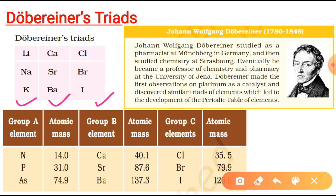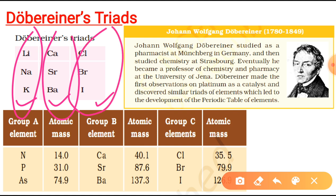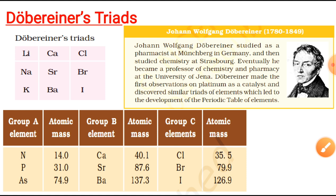Let's talk about the limitation. All the elements discovered at the time when Dobereiner gave the triad could not be classified into it — that was the biggest limitation of Dobereiner's classification. Dobereiner could identify only three triads from all the elements known at that time. So this classification is important mainly because it was the first attempt to classify elements.